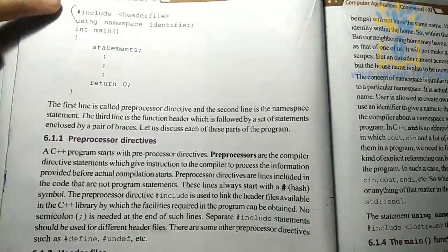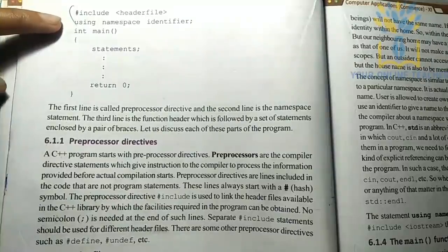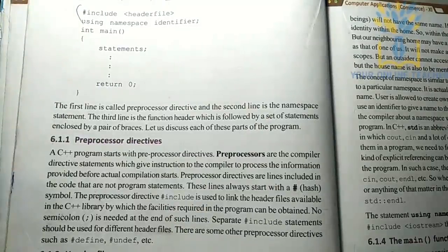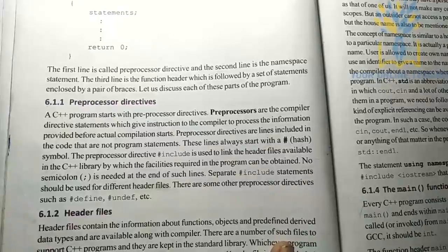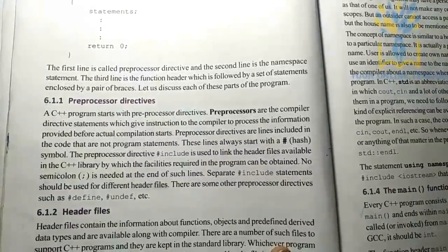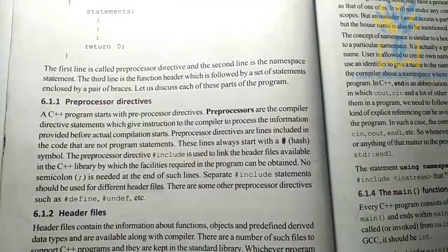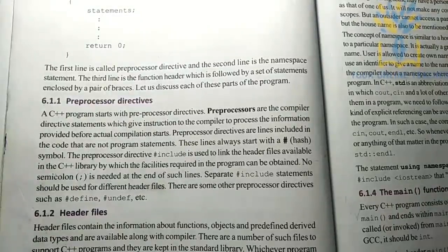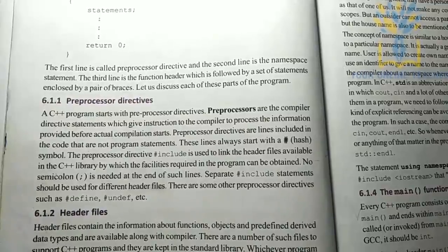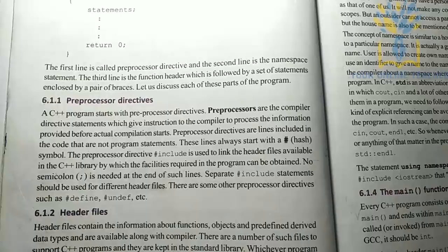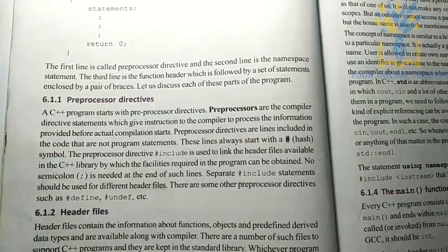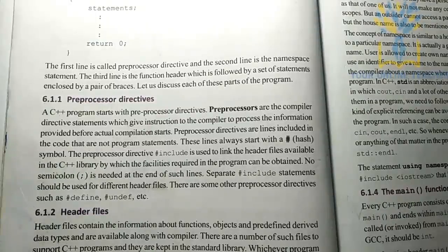In the 1st line, we will go to the pre-processed directive. In the 2nd line, we will go to the namespace statement. In the 3rd line, we will go to the function header — that is a few statements. In a C++ program, we start with a pre-processed directive. When you give the pre-processed directive to the preprocessor, it starts instructions on the compiler. This is the pre-processing directive.